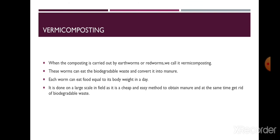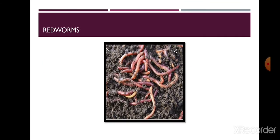One method of making compost is called vermicomposting. Vermicomposting is composting carried out by earthworms, also called redworms. Earthworms eat their way through the soil — they eat biodegradable waste and convert it into manure. One special thing about earthworms is that each worm can eat food equal to its own body weight in a day. Vermicomposting is done on a large scale in fields because it is a cheap and easy method to obtain manure and helps get rid of biodegradable waste.